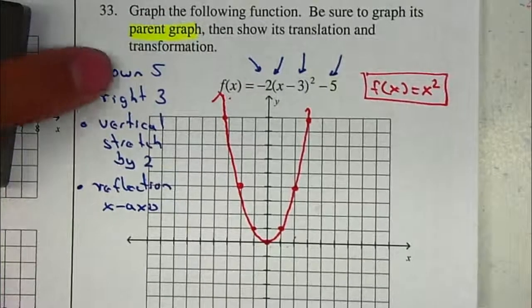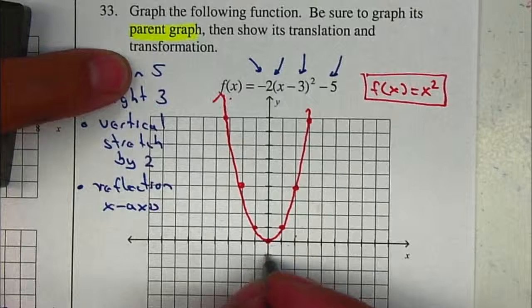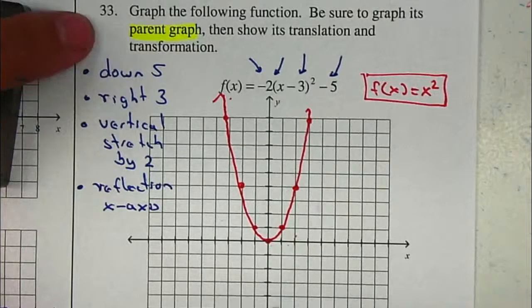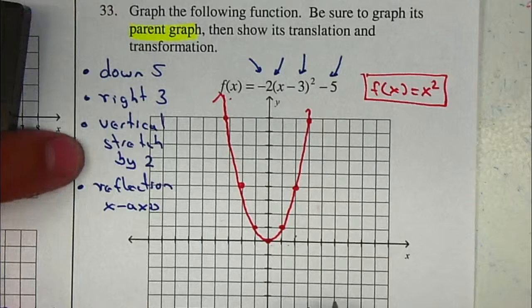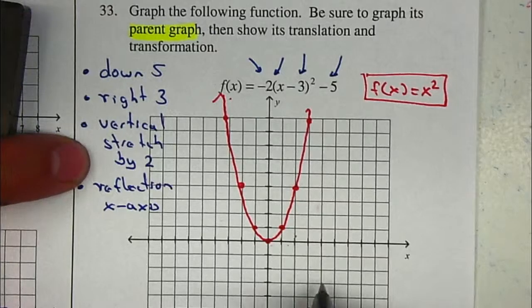So let's see. So it will be down 5: 1, 2, 3, 4, 5. And to the right 3: 1, 2, 3. Vertical stretch by 2 and reflected.